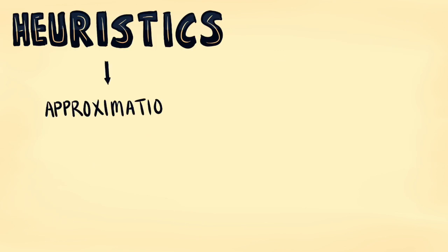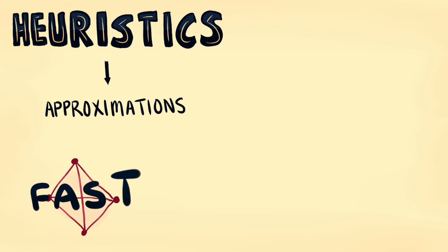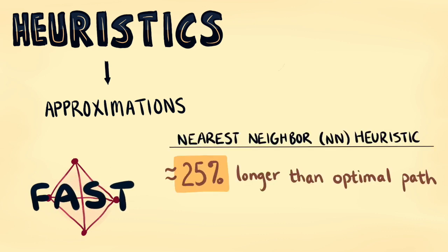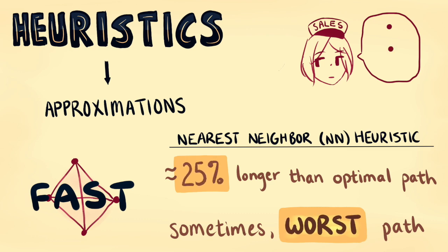Ultimately though, heuristics only approximate solutions, and while nearest neighbors is extremely fast, it's not very accurate. For some cities, it even gives the worst possible path.